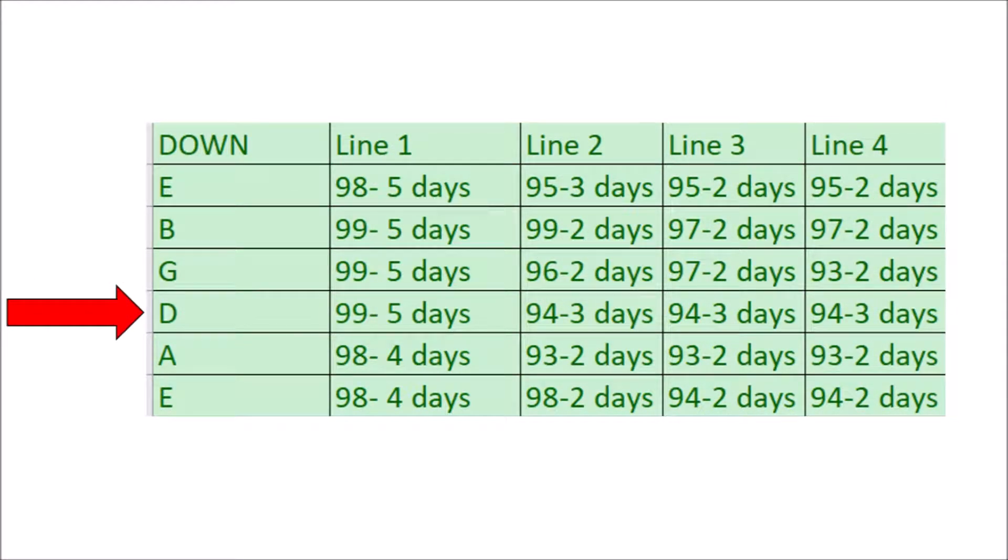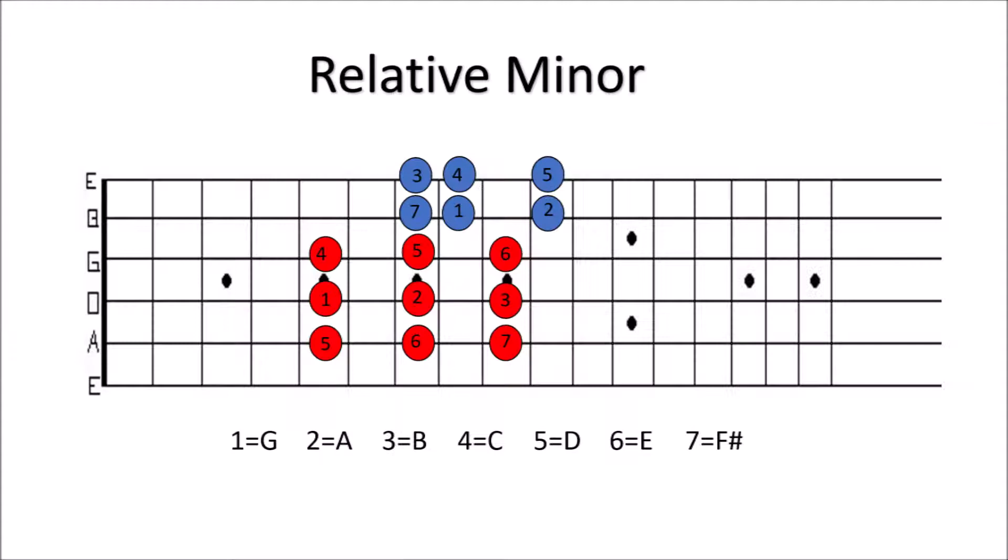For the rest of this episode, I wanted to talk about the relative minor to the major shapes we've been working on. In basic music theory, you learn that you can find the relative minor scale of a major scale by starting on the 6th scale degree of the major scale.